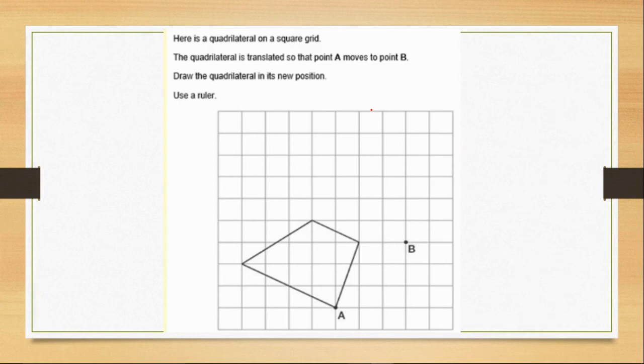Very quickly. Bit of a tricky one. It says, here is a quadrilateral on a square grid. The quadrilateral is translated so that point A moves to point B. Draw the quadrilateral in its new position. Use a ruler, which I'll try and attempt to do. So there are no points on here. No grid references, no numbers. So we need to work out what has happened.